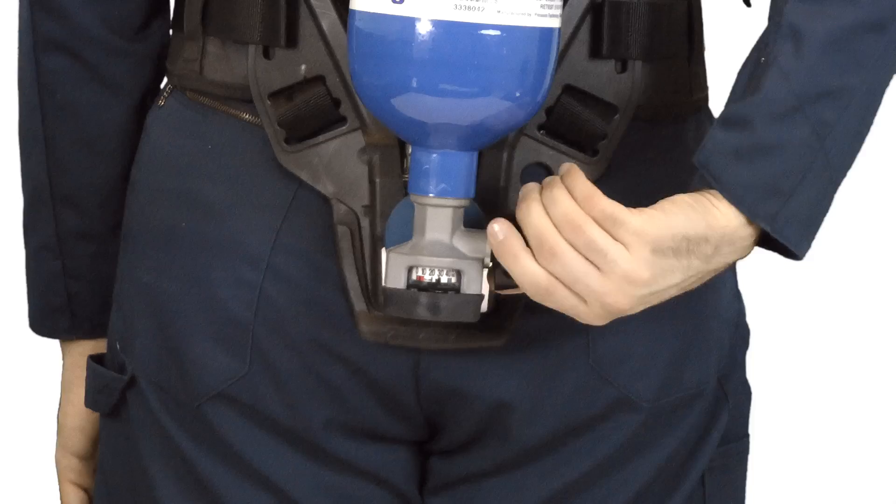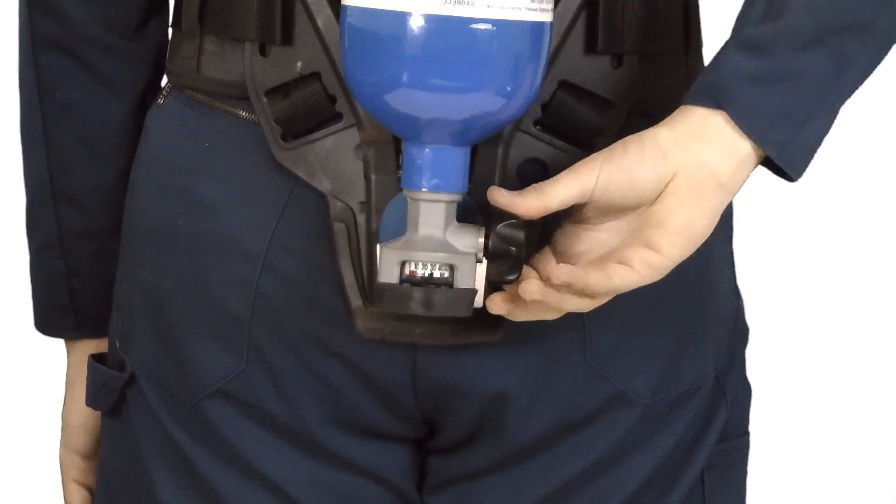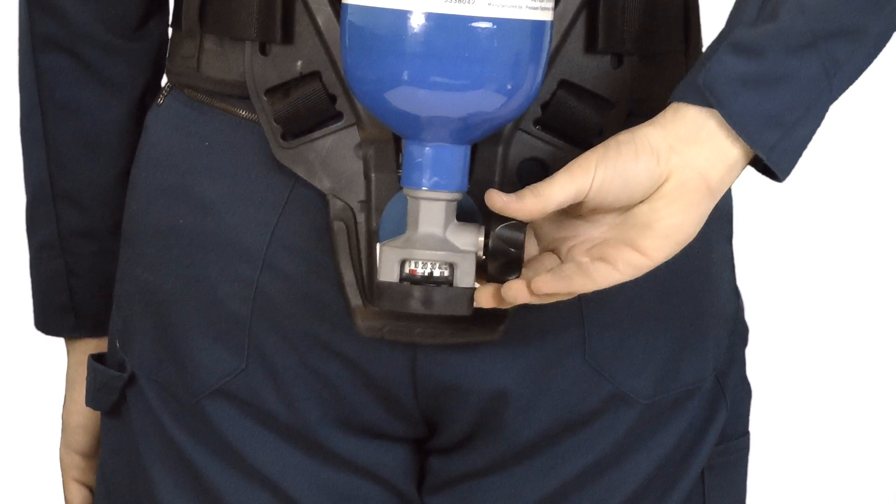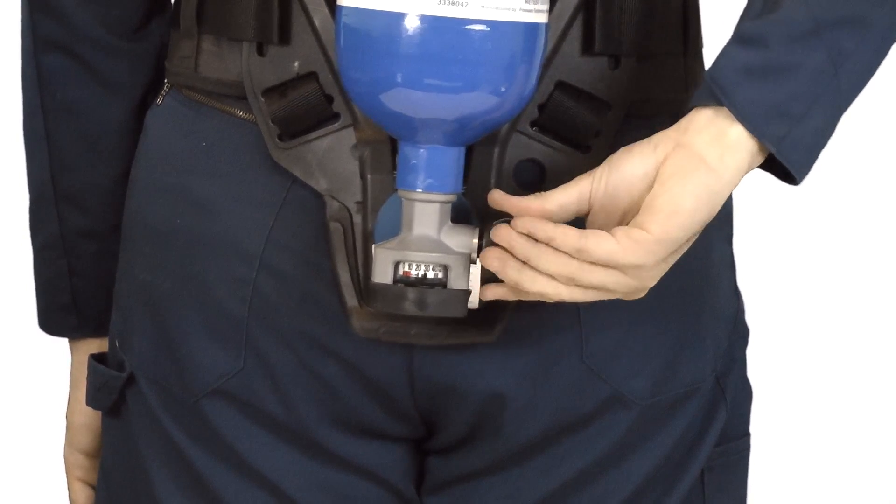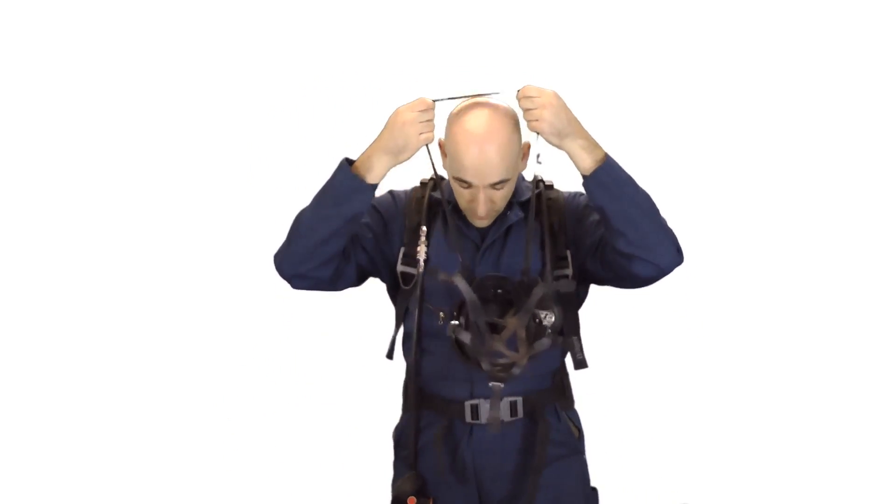Reach behind with your right hand to open the cylinder. Turn the valve away from you until the valve is completely open, then turn back a quarter turn. Place the neck strap of the face mask over your head.